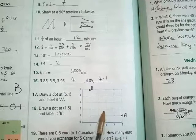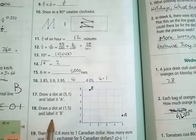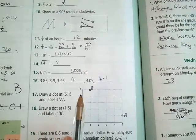Question 17: draw a dot at 5, 1 and label it A. So 5 across, 1 up, A. And 18: draw a dot at 1, 5 and label it B. 1 across and 5 up, that's B.